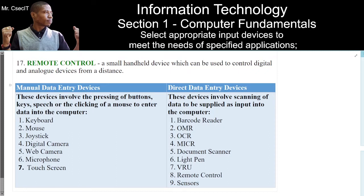Direct data entry devices: these devices involve scanning of data to be supplied as input into the computer. They include: barcode reader, OMR, OCR, MICR, document scanner, light pen, VRU, remote control, and sensors. See you in the next one.